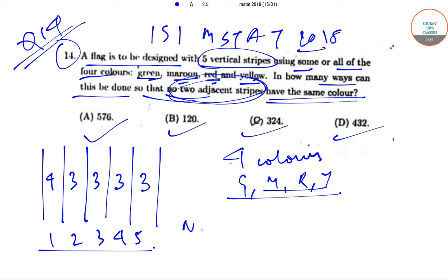So basically the number of ways will be equal to four for the first, three for the second, three for the third, three for the fourth and three for the fifth. So this will be equal to 324, which is option C.